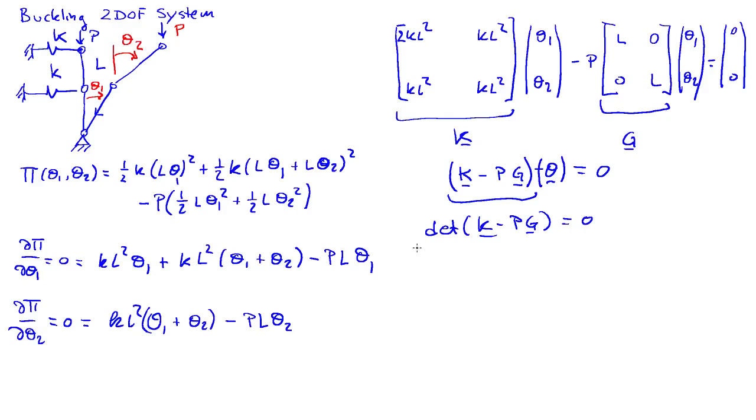This generates a second-order polynomial for P, which we can solve to determine the critical value. We get P1 and P2 equals K L times (3/2 ± √(5/4)).